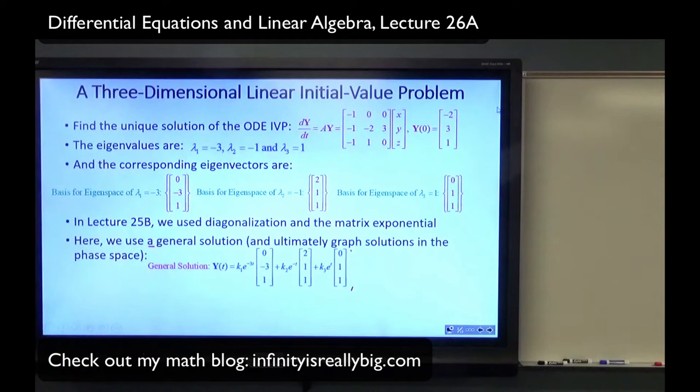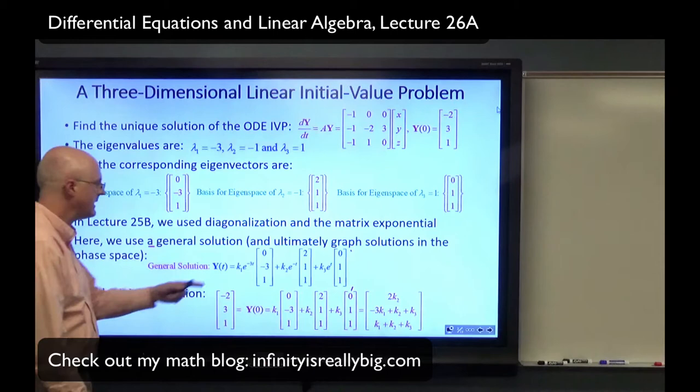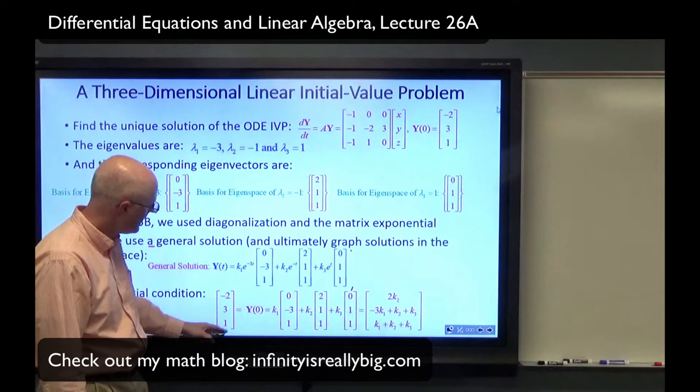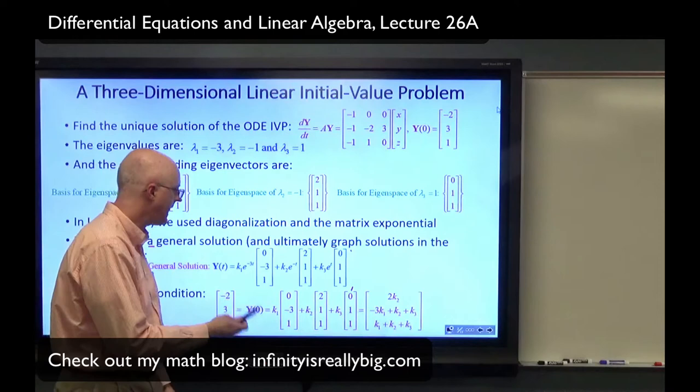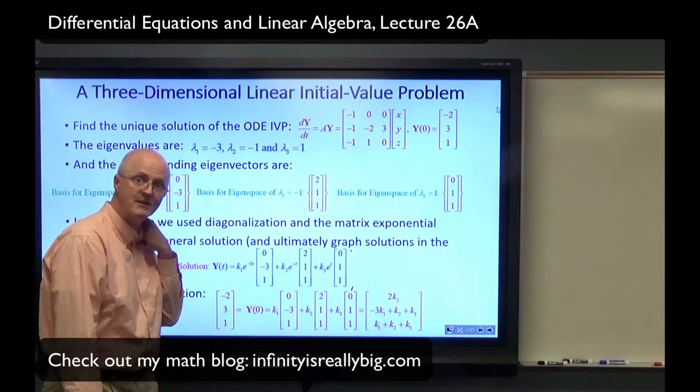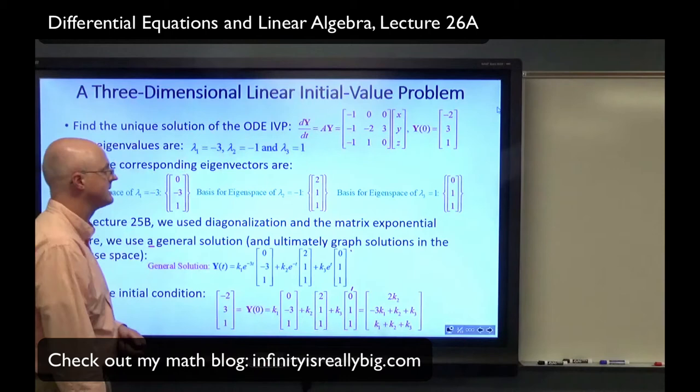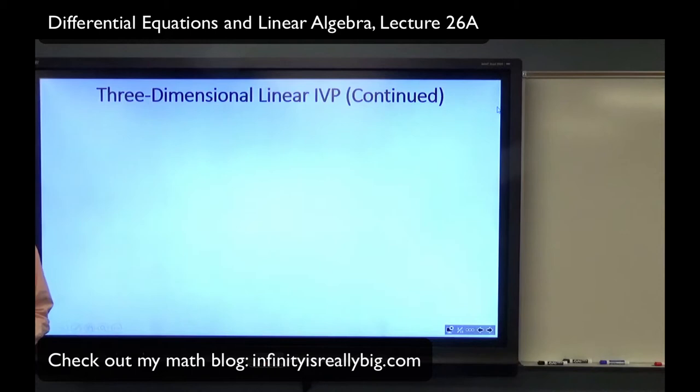Let's solve the initial value problem. Use the initial condition, plug in T equals 0 — e to the 0 is 1, so all the exponentials go away. You get that the vector (−2, 3, 1) is a linear combination of the three eigenvector basis vectors. I need to solve for K1, K2, and K3. This is a system of three linear equations and three unknowns, and because these were basis vectors, there will be a unique solution for K1, K2, and K3.